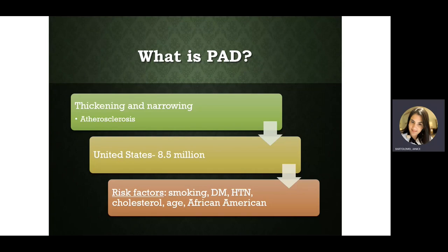There are lots of risk factors that lead people to develop peripheral artery disease. Some of them are smoking, hypertension, high cholesterol, bad diet, sedentary lifestyle, obesity, and diabetes — which is a huge one. Anyone over the age of 50 is also at risk, and stress and some hormones can contribute. It is most common in African-Americans.